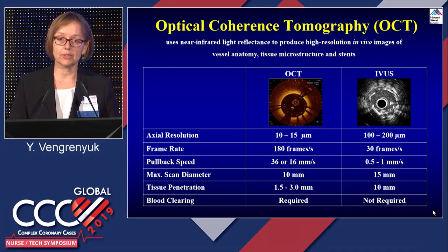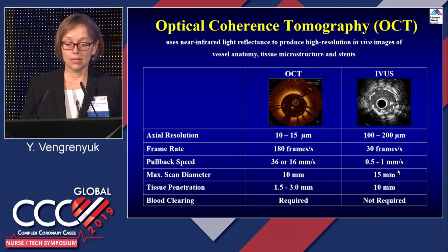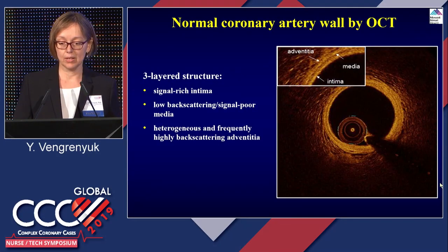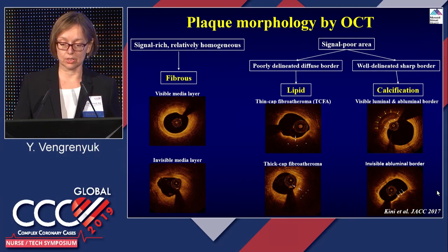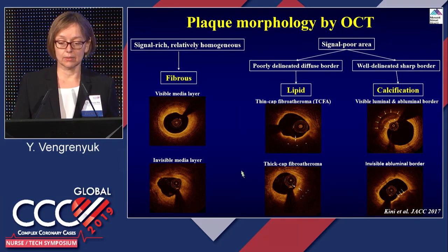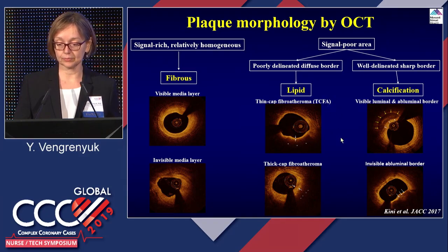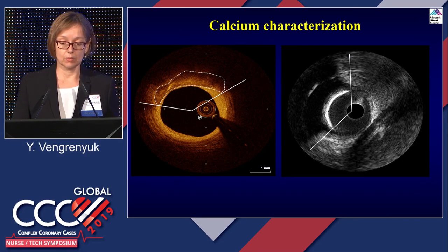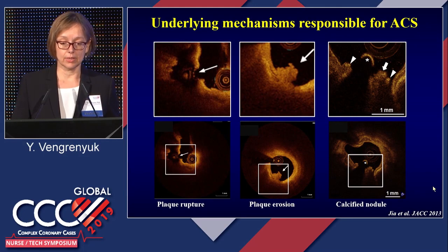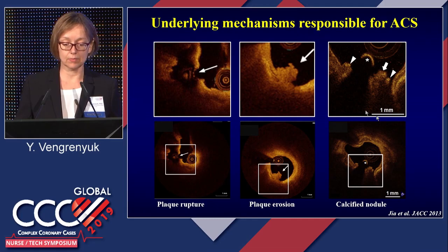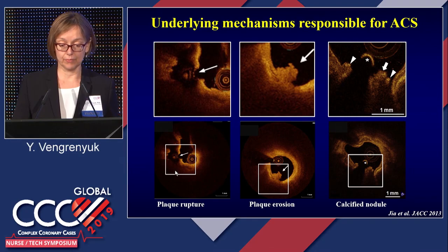The most important difference with OCT is that blood clearance is required, and some lesions have to be predilated before imaging. Similar to IVUS, OCT shows a three-layer structure — intima, media, adventitia — with much more detailed characterization of atherosclerotic lesions based on signal attenuation. Lesions can be characterized as fibrous, lipid-rich, or calcified. Only OCT can measure fibrous cap thickness, with a cutoff of 60 microns for thin-cap fibroatheroma. In contrast to IVUS, OCT can measure not only calcium arc but also calcium area and thickness — very important for intervention. OCT can also characterize mechanisms responsible for acute coronary syndrome: plaque rupture with a visible tear, fibrous cap and red thrombus, plaque erosion with no visible rupture site, and calcific nodule.